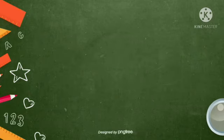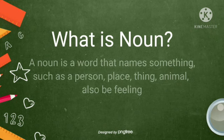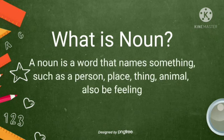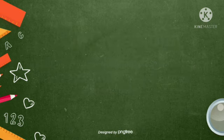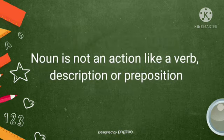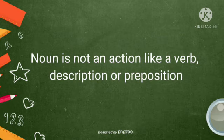Countable and uncountable nouns. What is noun? A noun is a word that names something such as a person, place, thing, animal, also be feeling. Noun is not an action like a verb, description, or preposition.